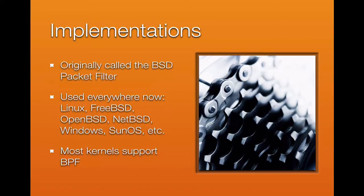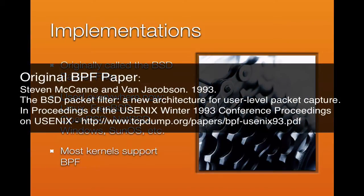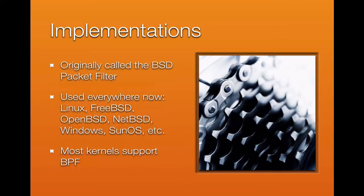There are different implementations of the Berkeley Packet Filter. Originally it was called the BSD Packet Filter, developed on the BSD operating system before FreeBSD and OpenBSD. A paper was released about this in 1993, so it has been around for a long time. Now you find BPF in Linux, FreeBSD, OpenBSD, NetBSD, Windows, SunOS, and others — most kernels you'll encounter support it.